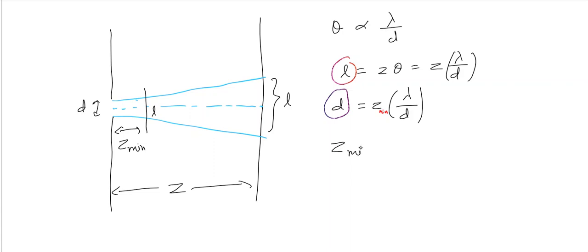We get it to be d squared by lambda, where d is the slit size, lambda is the wavelength, and z minimum is called Fresnel distance. It signifies the distance up to which light is traveling almost without deviation. So that was the topic, thank you.